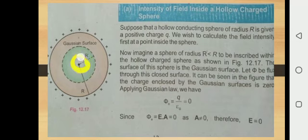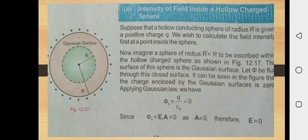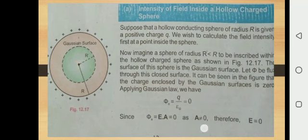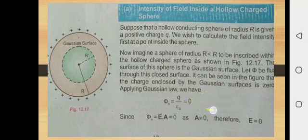To calculate electric field intensity, we use the electric flux formula: electric flux equals E dot A, where E is electric field intensity and A is the vector area. Since the electric flux is zero, and it depends on two factors — electric field intensity and vector area — the area can never be zero. Therefore, electric field intensity must be zero inside this region. So we have calculated that the electric field intensity inside a hollow charged sphere is zero.